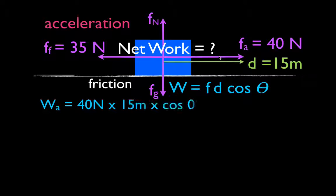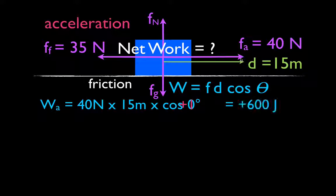For the applied force, the applied force is 40 newtons, the distance is 15 meters, and the angle between the force and the displacement is zero degrees. The displacement and the force are parallel lines pointing in the same direction, so the angle between them is zero. The cosine of zero is one, and that means the applied force does 600 joules of work — positive work, force in the direction of the displacement. You should have in your head the cosine of zero degrees, 90 degrees, 180, and 270. The cosine of zero degrees is plus one — you could look it up or get it from your calculator, but it's good to have the cosine and sine curves in your head.